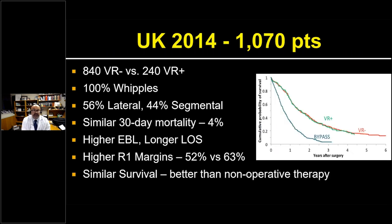A decade later, the next largest series from the UK had 240 vein resections with a matched comparator, all Whipples, equally distributed between lateral and segmental resections. They also found similar 30-day mortality, higher blood loss, higher length of stay, higher positive margin rates, and identical survival between venous resection and no venous resection.